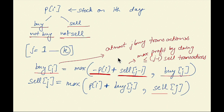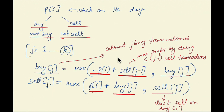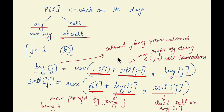Similarly, we can decide to sell on day I. If we don't sell on day I, the maximum profit by at most J transactions remains the same. But if we decide to sell on day I, we earn a profit of p[i] plus the maximum profit from doing J buy transactions. This means we can have a Jth sell transaction only if we have done J buy transactions, and we can do the Jth buy transaction only after doing J minus one sell transactions.